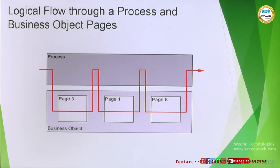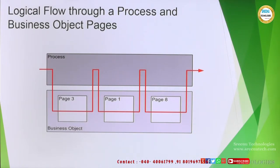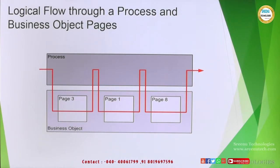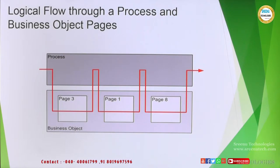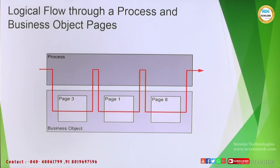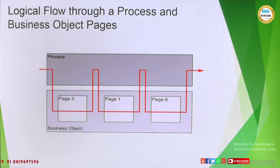So if you see this diagram, the process line starts from the process, comes to a business object, and then goes back to the process, then comes to page one. These business object pages are called actions. Every page in a business object is called an action. Unlike in a process, there is no need to go in sequence. Based on our need, page three is called first, then control goes back to the process, then page one is called, then page eight, and then the process is completed.